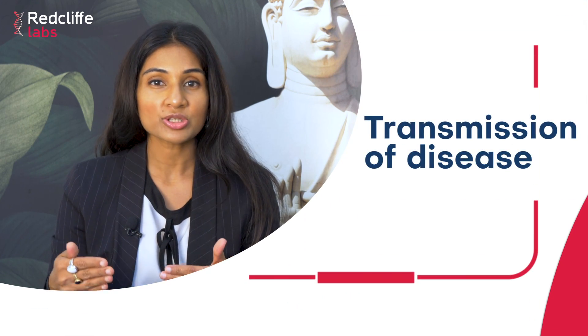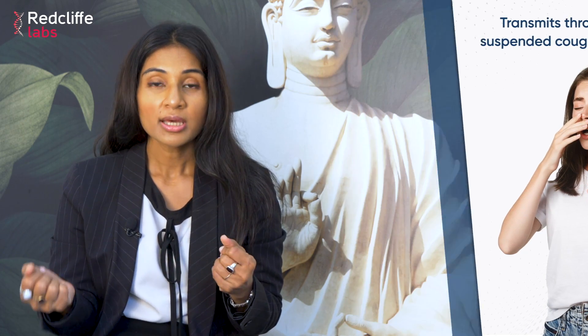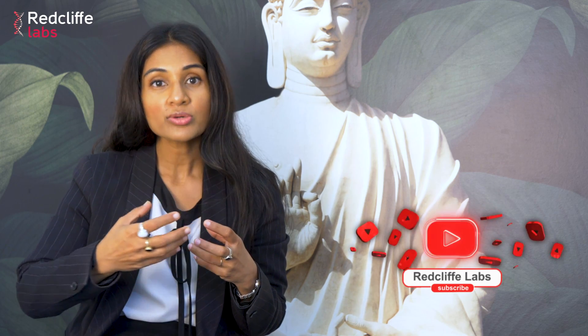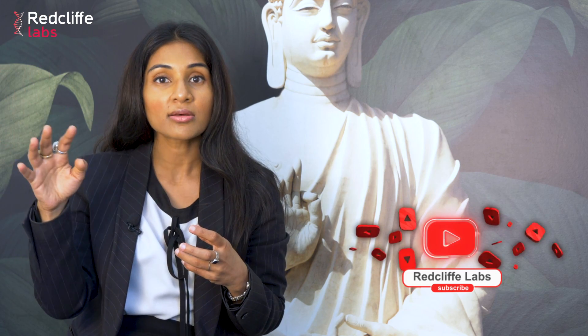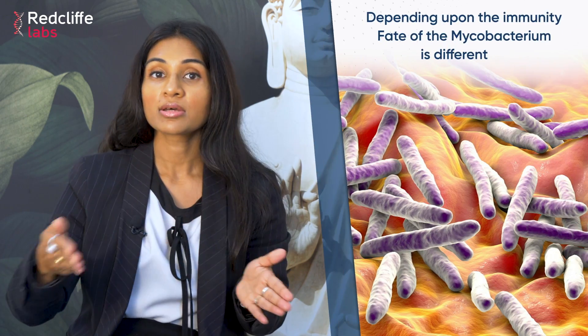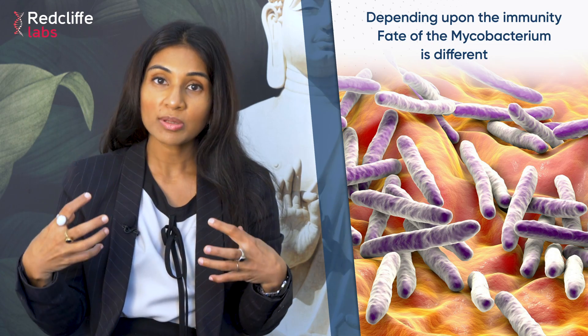How does transmission happen? Transmission of tuberculosis from one person to another happens through droplet transmission — that is, if a patient is infected and sneezes or coughs, then the tuberculosis bacilli are released and remain suspended in the environment or in the air for several hours. If somebody then inhales, these bacilli may reach the alveoli.